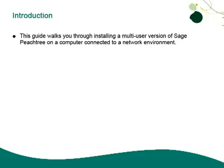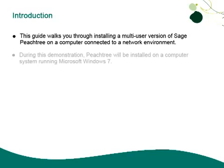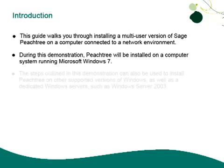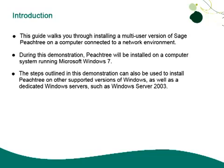This guide provides a walkthrough of installing a multi-user version of Sage Peachtree on a computer connected to a peer-to-peer network environment. During this demonstration, Peachtree will be installed on a computer system running Microsoft Windows 7. However, the steps outlined here can also be used to install Peachtree on other supported versions of Windows, as well as dedicated Windows servers such as Windows Server 2003.